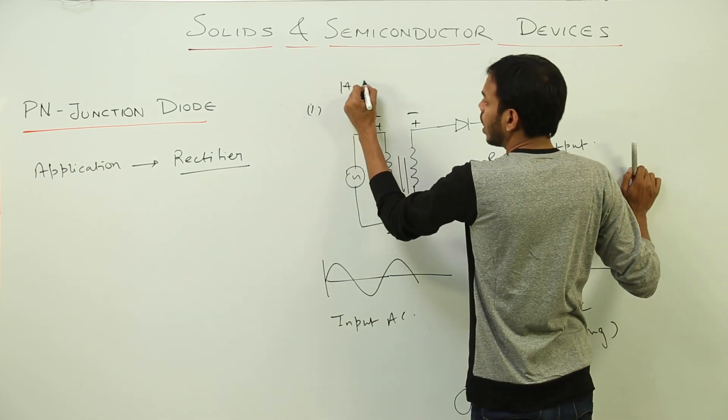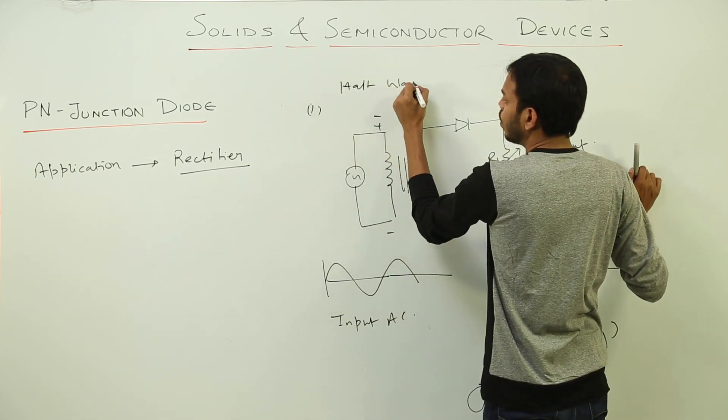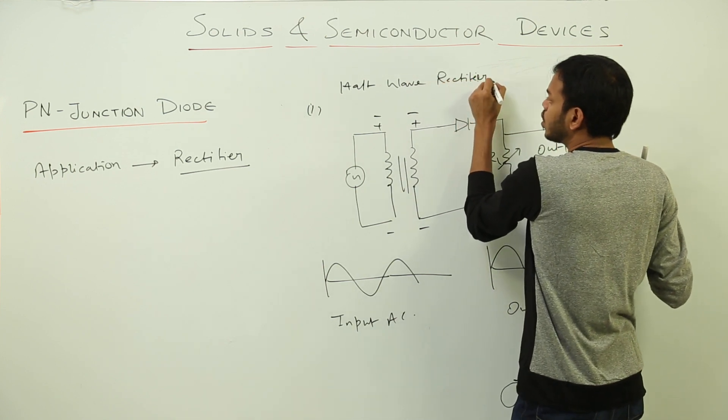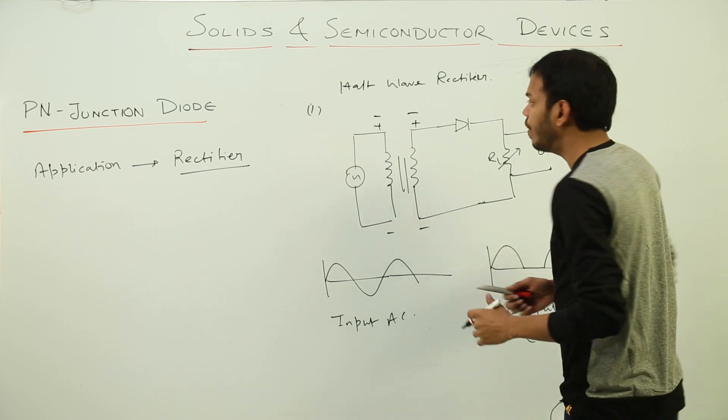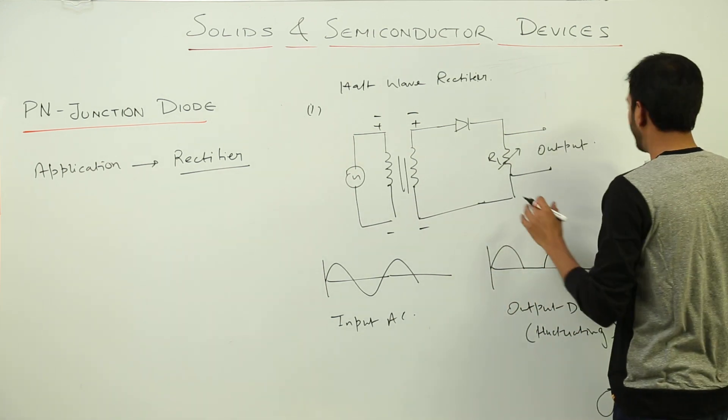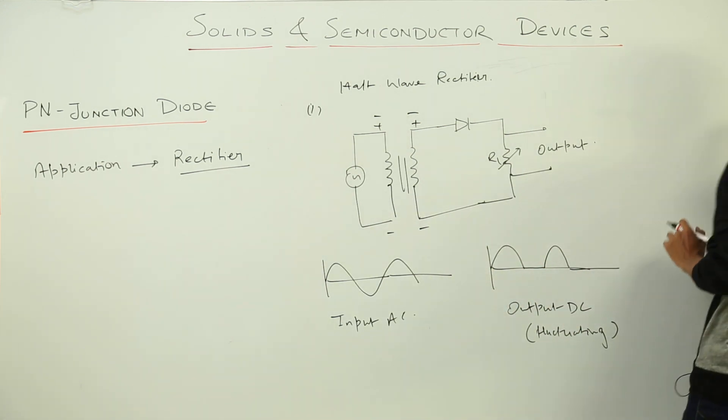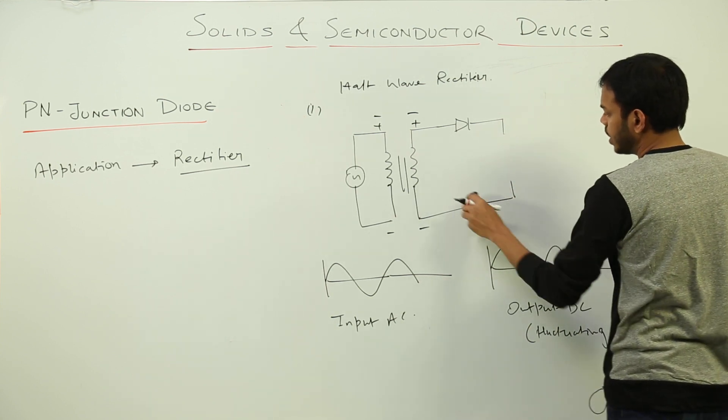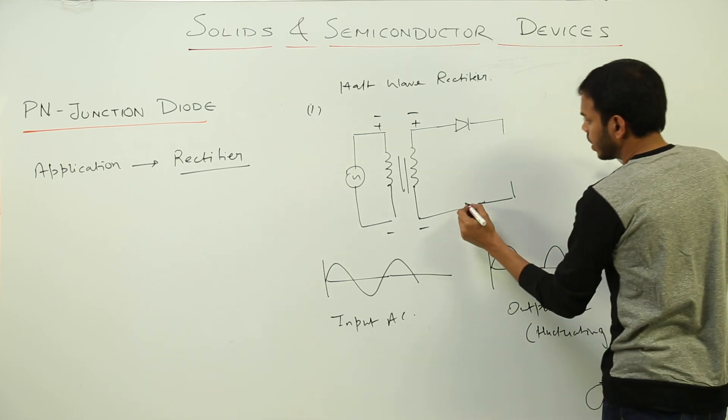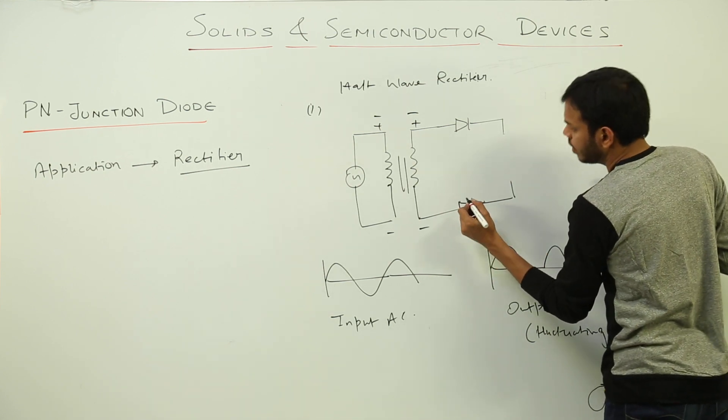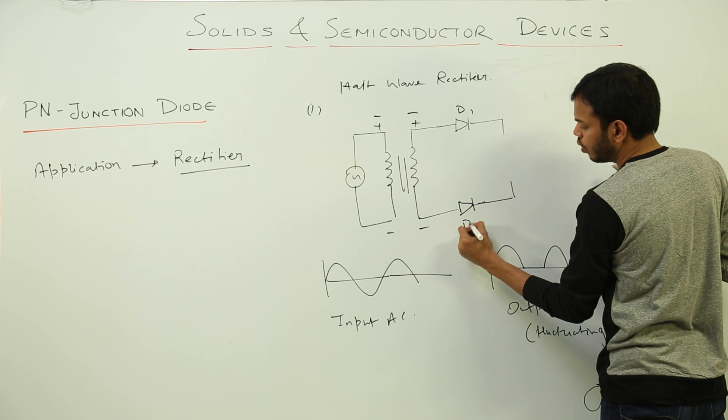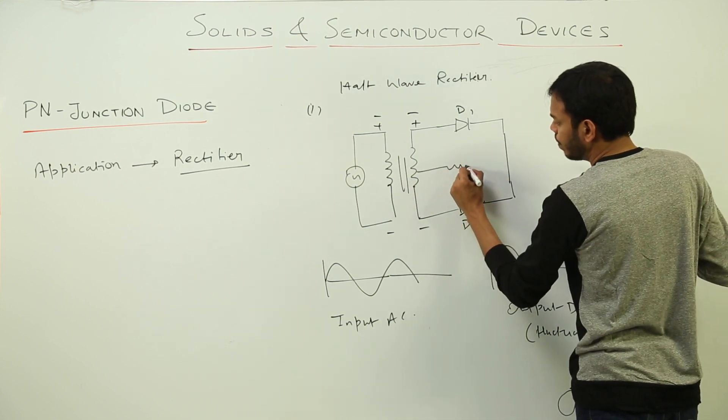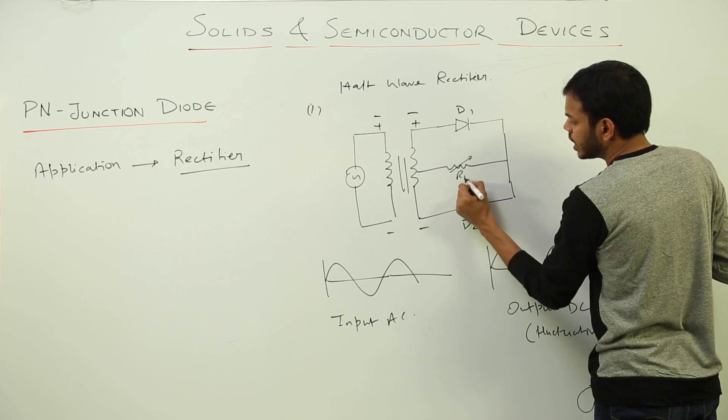So in order to convert it into full wave rectifier what we do? We do some small changes in the circuit. See this is what we do: replace another diode here. This is diode D1, this is diode D2 and the output is taken from the center. This is load resistance RL across which output is taken.